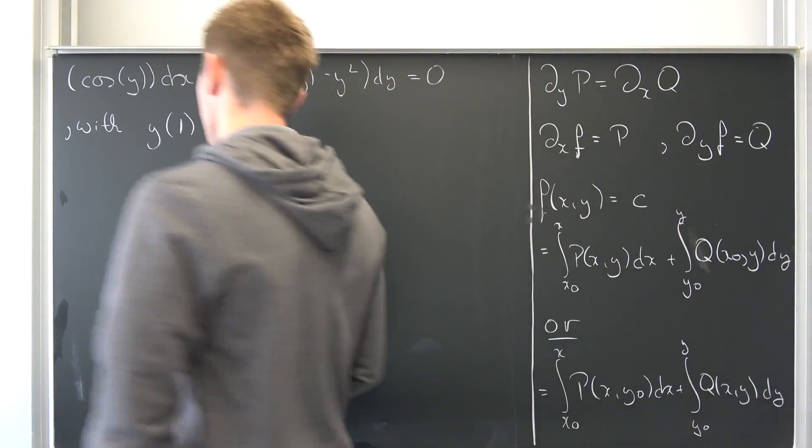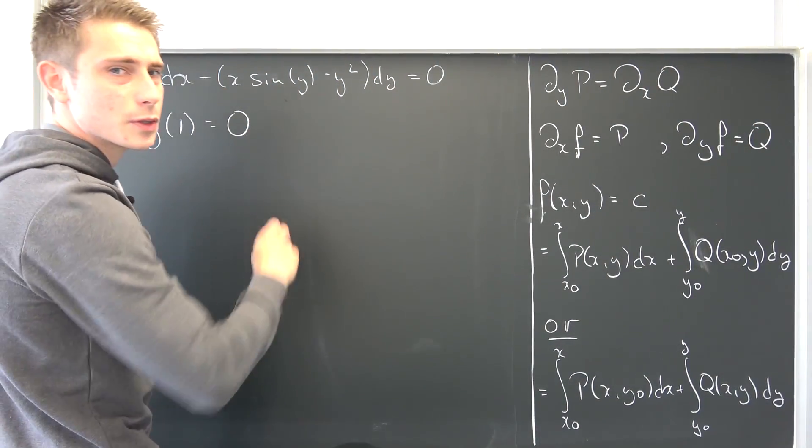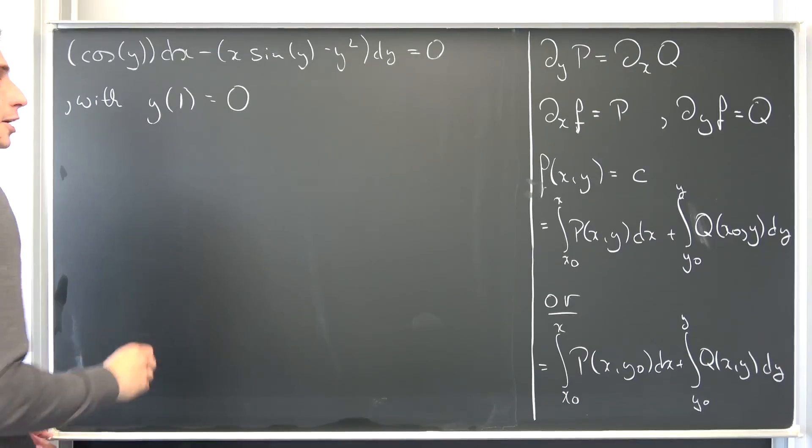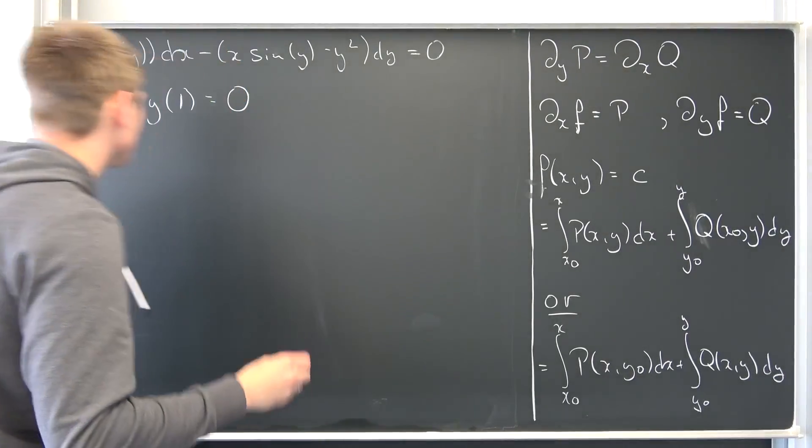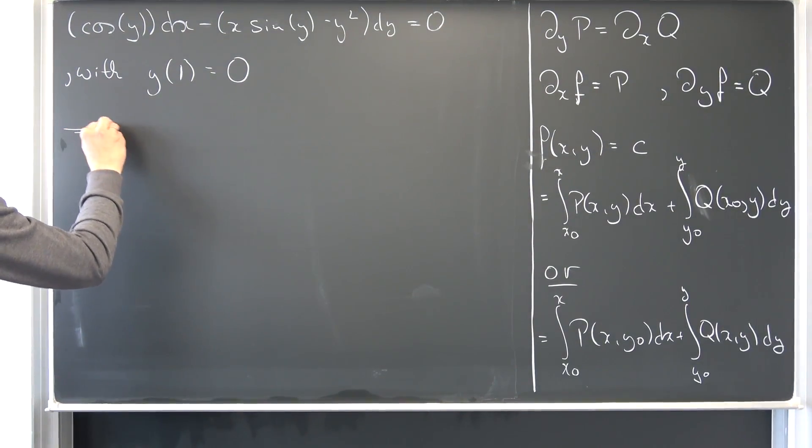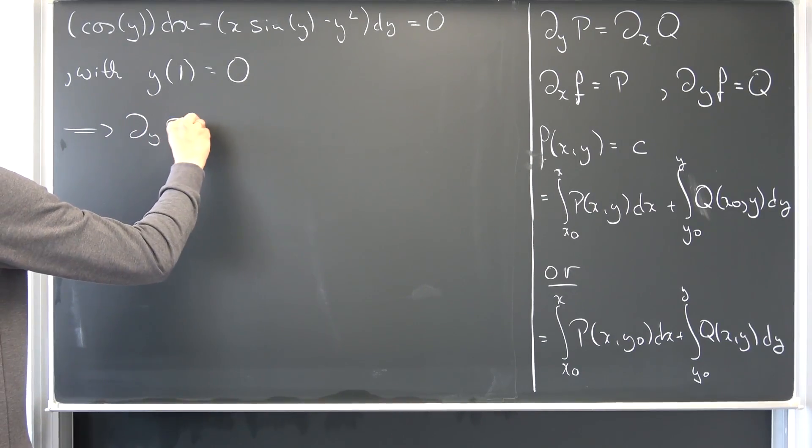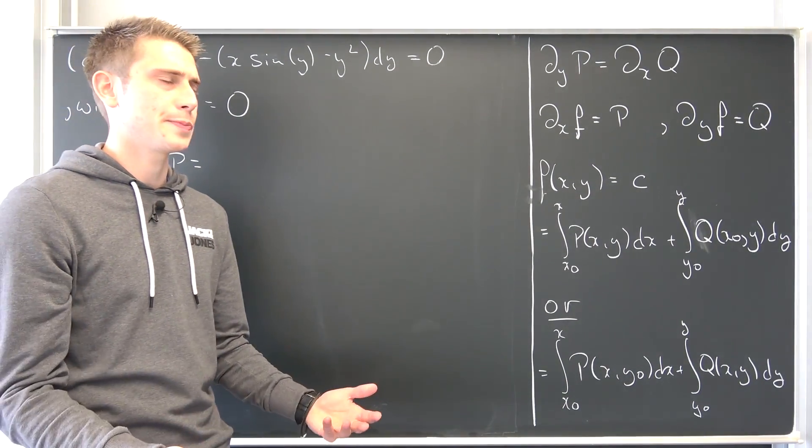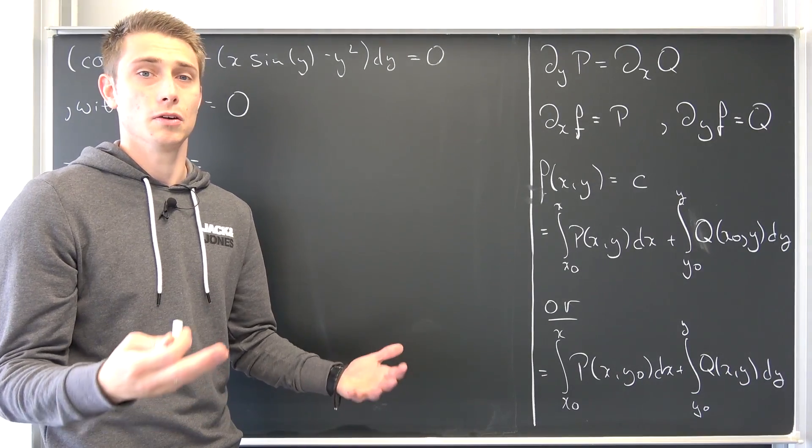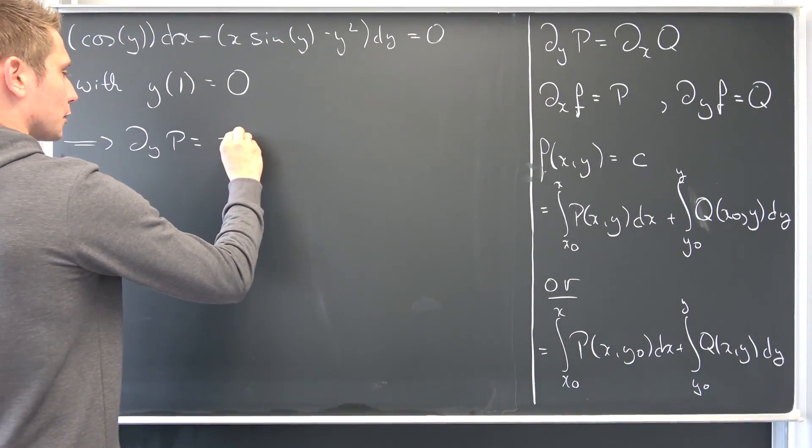So let us go ahead and get started. This right here is our P and this right here is our Q, my boys and girls. You have a high IQ, you know what's going on. Now del_y P is nothing but, okay, cosine differentiated with respect to y does nothing but give us negative sine of y.